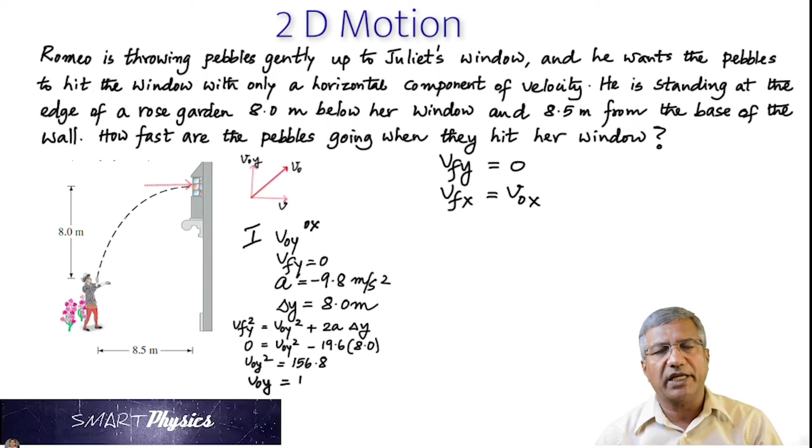So when you multiply that and rearrange, you get 156.8. And the square root of 156.8 is 12.5 meter per second. So now we know that the initial Y velocity is 12.5 meter per second. That's a good start.